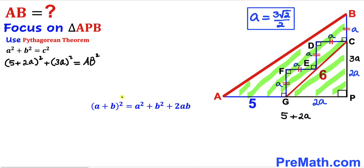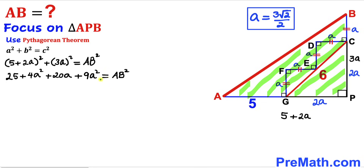Recalling the identity (A + B)² = A² + B² + 2AB, we expand: (5 + 2a)² = 25 + 4a² + 20a, and (3a)² = 9a². Combining like terms gives us 25 + 13a² + 20a = AB².